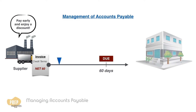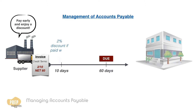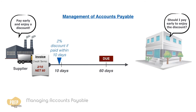For example, a 2/10 net 60 term means that the payment is due in 60 days, but a 2% discount is applied if the payment is made within 10 days from the invoice date. So now the company has a dilemma: pay early and enjoy the 2% discount, or stretch the payment until the 60th day.